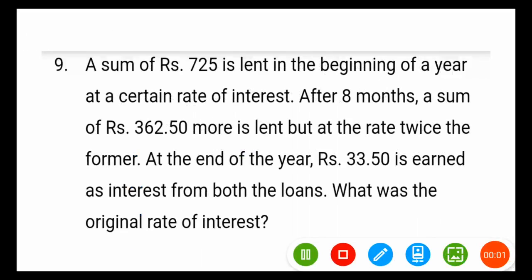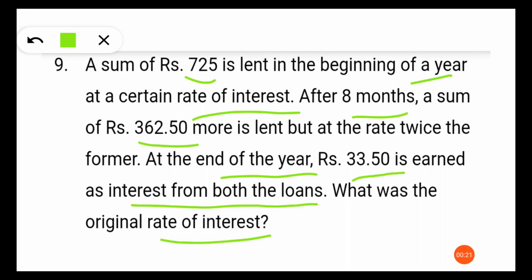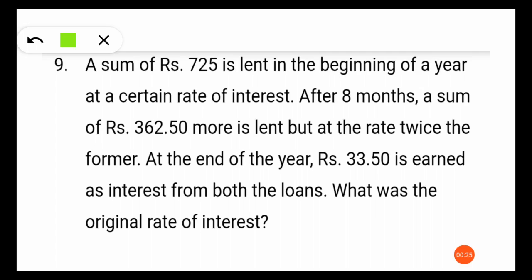The second question: a sum of rupees 725 is lent at the beginning of a year at a certain rate of interest. After eight months, a sum of 362.50 more is lent at twice the former rate. At the end of the year, 33 rupees 50 paisa is earned as interest from both loans. What was the original rate of interest? The 725 rupees is lent at rate x for the whole year, and 362.50 is lent at twice the rate after eight months.